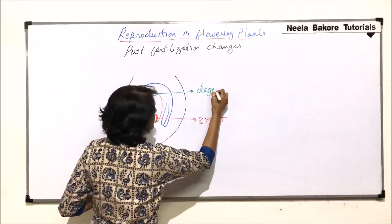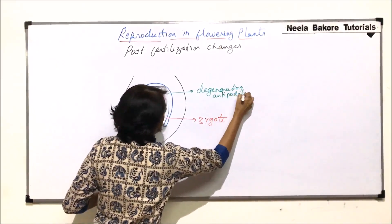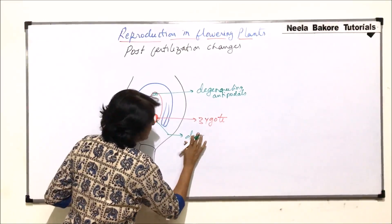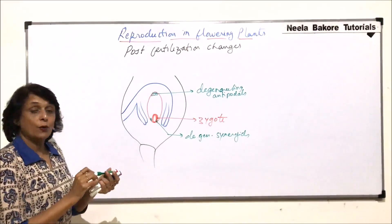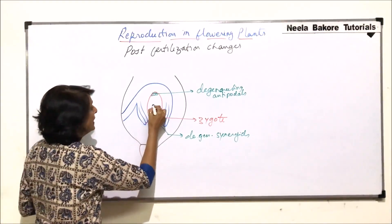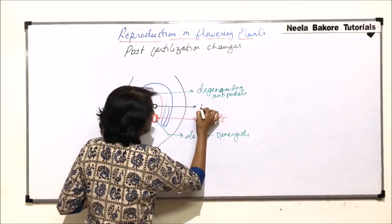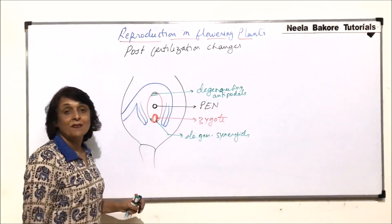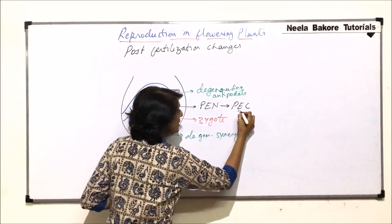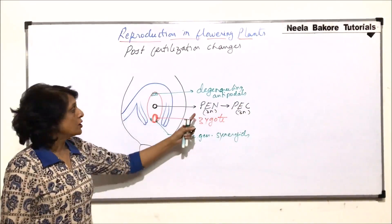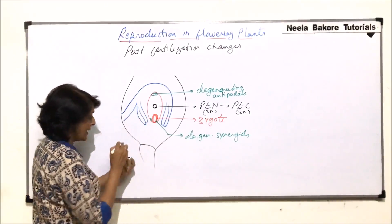At the chalazal end there were three antipodals, and these three antipodals would also degenerate. So we have degenerating antipodals and degenerating synergids — they degenerate once their function is over. In the middle part there is a triploid nucleus, forming a triploid cell. When it was the nucleus we called it the primary endosperm nucleus, and this primary endosperm nucleus changes into the primary endosperm cell, which is a 3N or triploid cell, formed as a result of triple fusion.